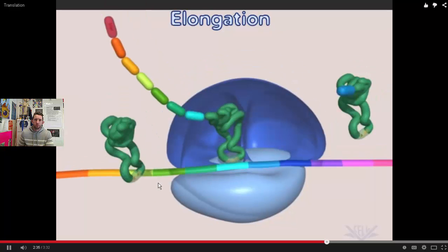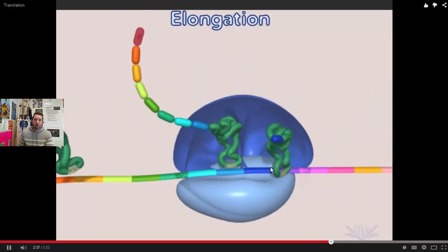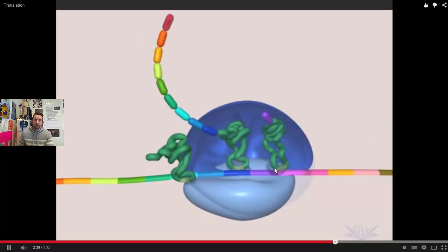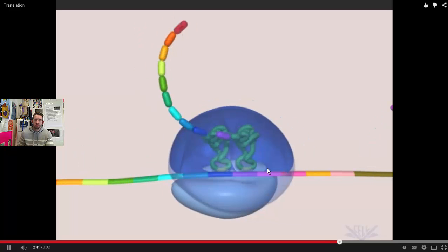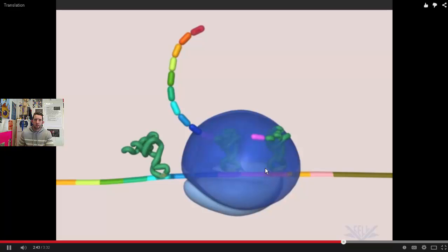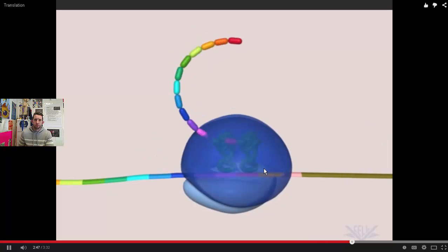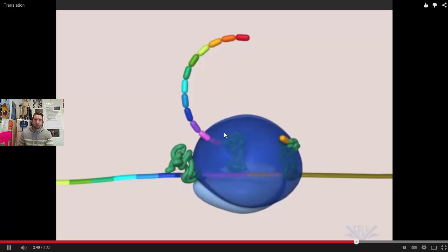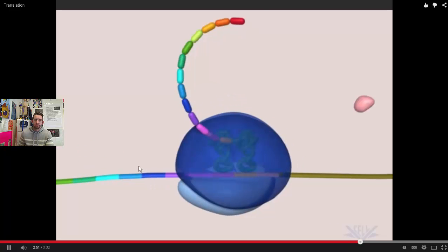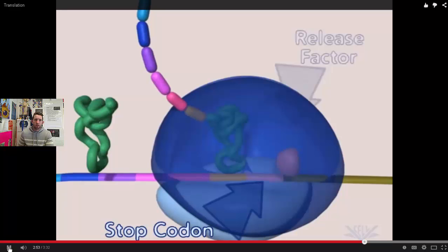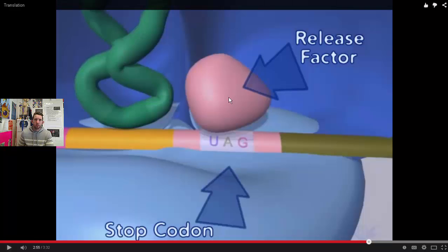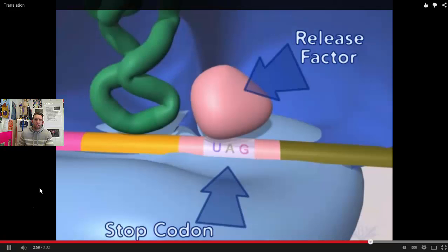And that's going to happen until the codon calls in a release factor. And that signifies termination. That's going to release the amino acid chain. There's our stop codon, UAG, which calls in a release factor, which releases our amino acid chain.